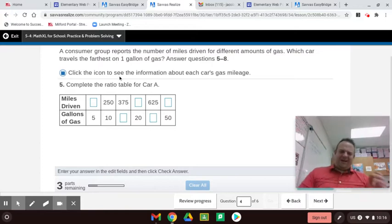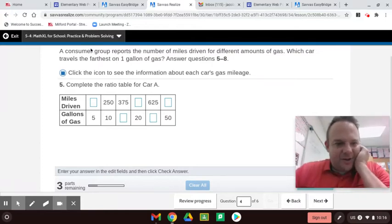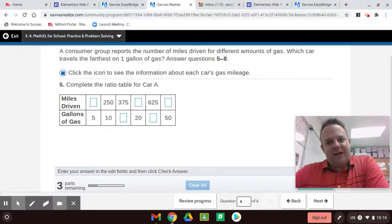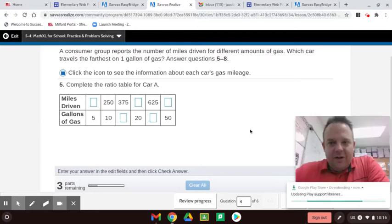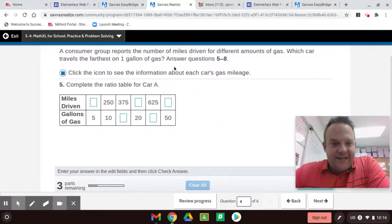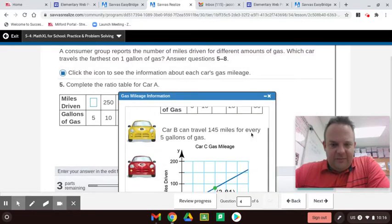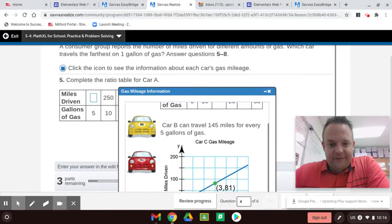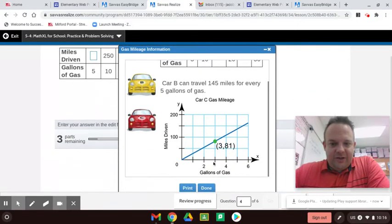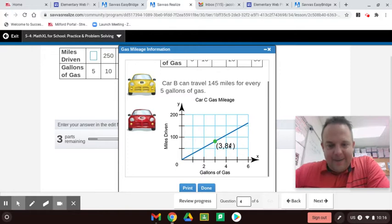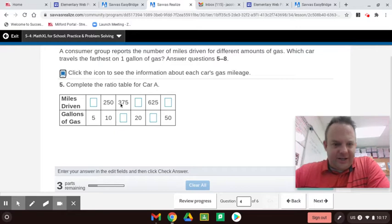Oh yes, this one you probably came to get, this gas mileage one. A consumer group reports the number of miles driven for different amounts of gas. Which car travels the farthest on one gallon of gas? So miles per gallon, how many miles can you go on one gallon? Let's check it out. So we have three cars here. You have car A with a ratio table, and you have car B with this information here: 145 miles for every 5 gallons. You would do 145 divided by 5 to figure out how many miles per one gallon, which we're going to have to do. And then you have car C, which is for 3 gallons of gas you can drive 81 miles. So you would do 81 divided by 3 to figure that out. We're going to do that in just a second.